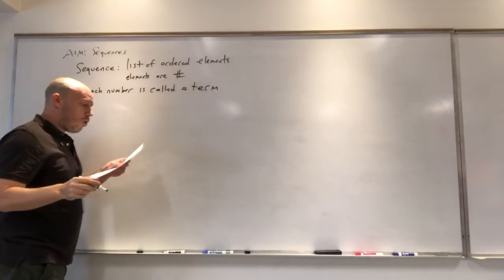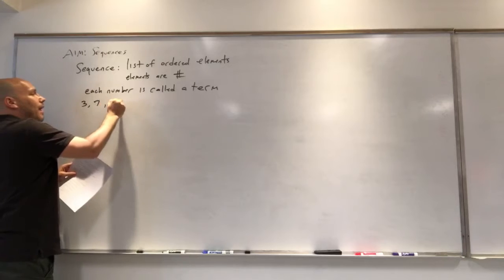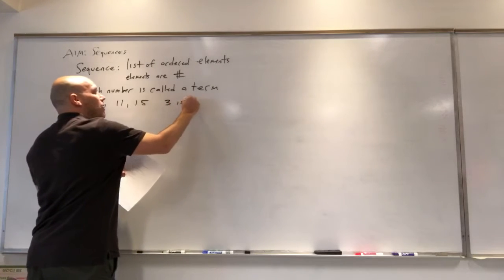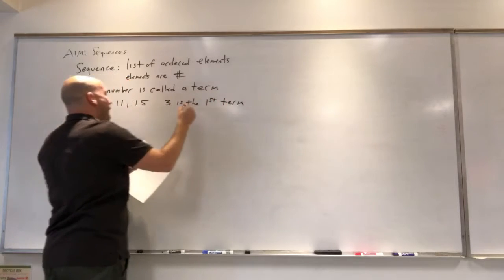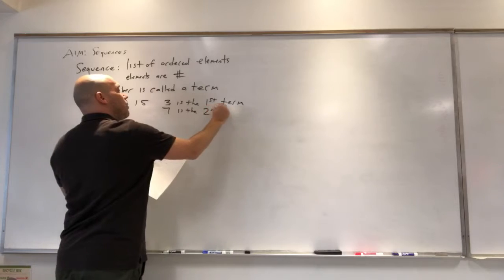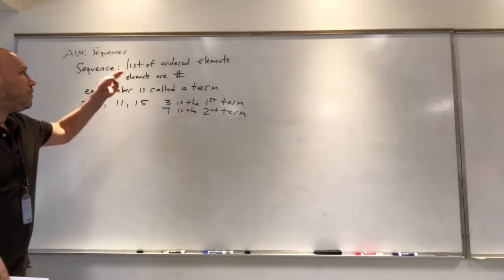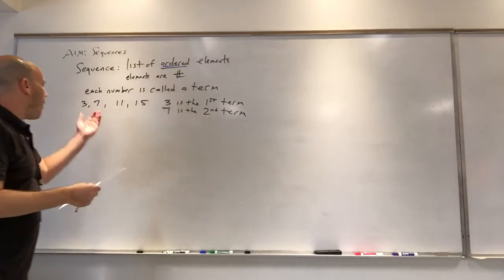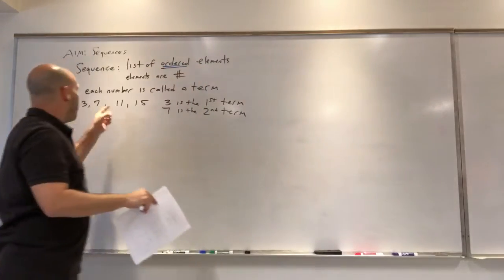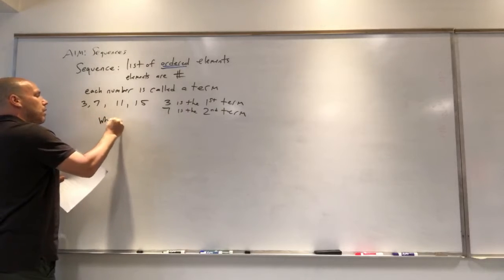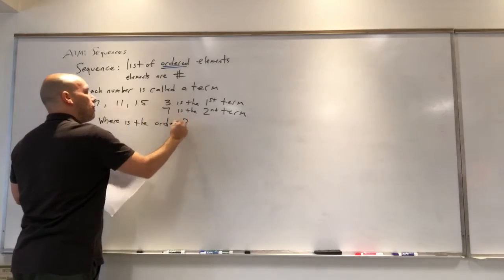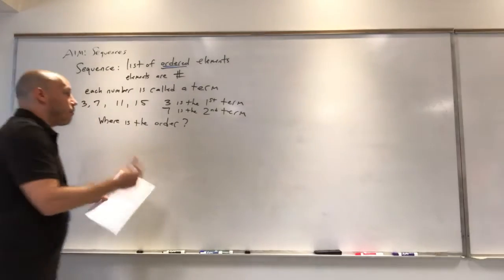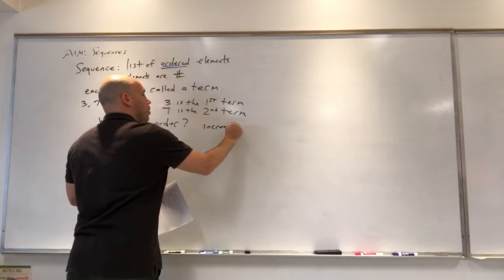So if I give you the sequence 3, 7, 11, and 15 — how would we describe 3? We'd say 3 is the first term, and 7 is the second term. The definition talks about order — ordered elements. So the question is: where is the order here?